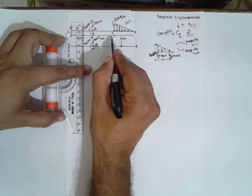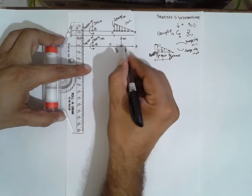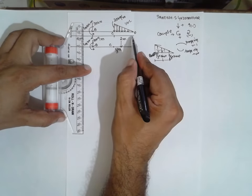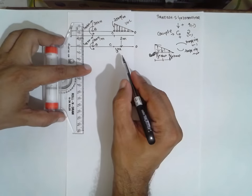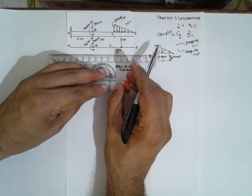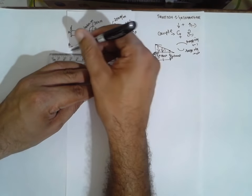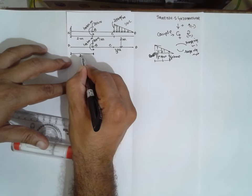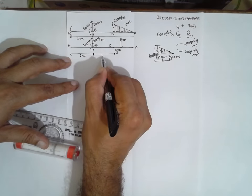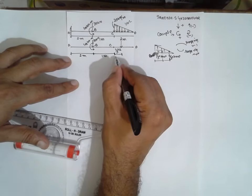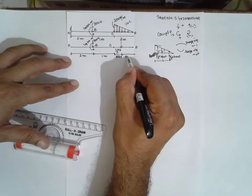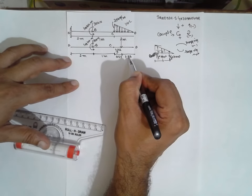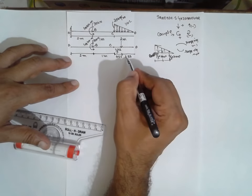From this side I will consider 1/3 into base. The base here is 2. From the other end: 2/3 into 2 gives 1.33. The lengths are: from here to here is 2 meters, from here to here is 1 meter, the point load location is at 0.67 from C, which gives 1.33 from the other end — confirmed by 2/3 into 2 equals 1.33.